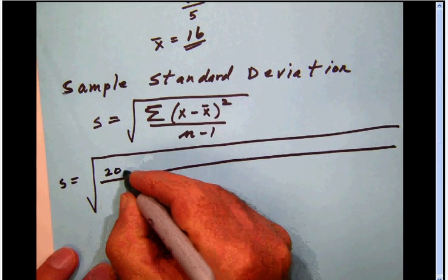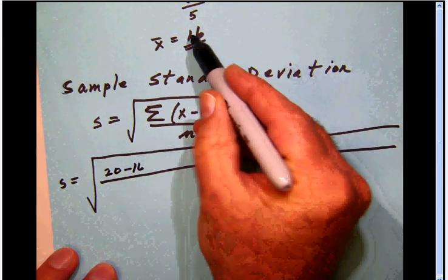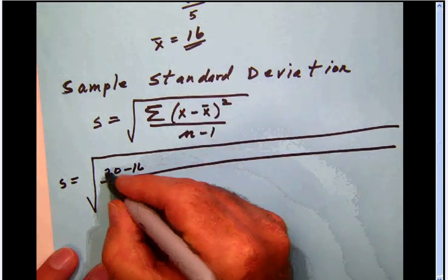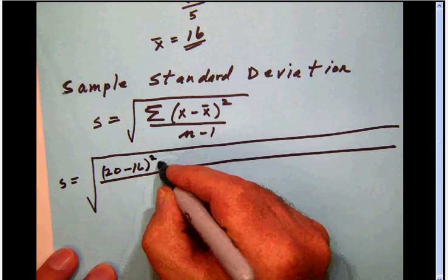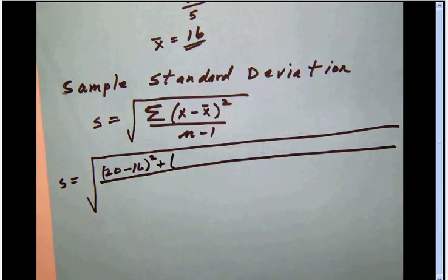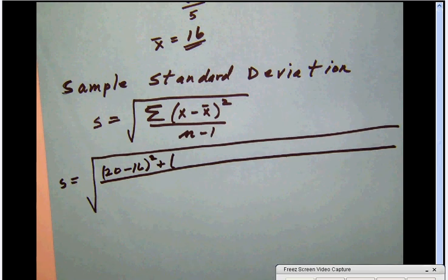So what we will do here is take 20. We will subtract our average, which we got up here, which was 16, and we'll square that. Then we'll continue on and set up the rest of that. I'll let you go ahead and do that. I'll do the same thing and we'll stop and check on our progress here in a second.